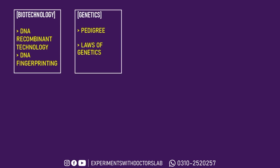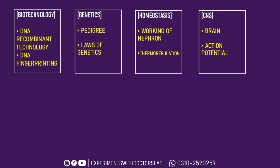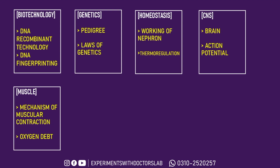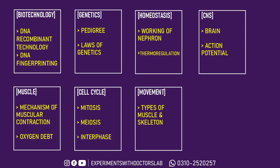For Genetics, you have to practice pedigree questions and Mendel's Laws. For Homeostasis, focus on the working of nephrons and thermoregulation. In CNS, focus on the brain and action membrane potential. For Muscles, study the mechanisms of muscular contraction, oxygen debt, and related topics. For Cell Cycle, focus on mitosis, meiosis, and interphase. For Movement, prepare types of muscles and the skeleton.